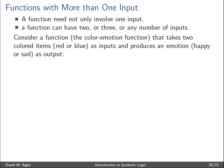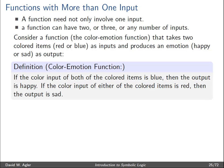Let's consider an example — the color emotion function. It takes two colored items, imagine pieces of clothing, as inputs, and relates them to one and only one output: an emotion, either happy or sad. Let's define this more specifically: the domain is blue and red, and the output emotions are happy or sad. If both color inputs are blue, the output emotion will be happy. If either of the colored items is red, the output emotion will be sad.